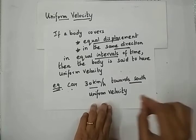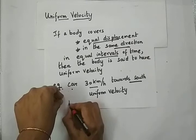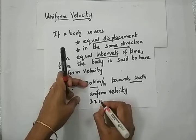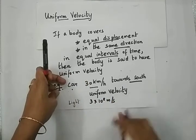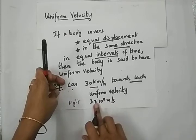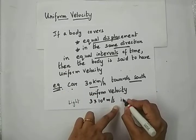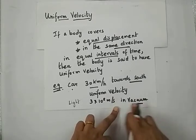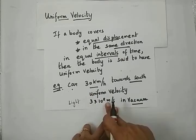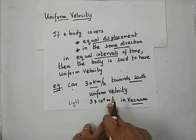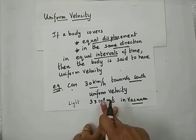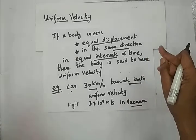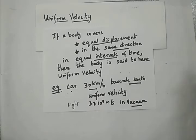One more example of something moving with uniform velocity is light. Light travels with a speed of 3 lakh kilometers per second, that is 3 × 10⁸ meters per second. Every second it covers this distance and travels in the same direction in a straight line in vacuum — vacuum meaning without anything, like air, in space. Since light maintains the same direction and the same speed, we say that light travels with uniform velocity.